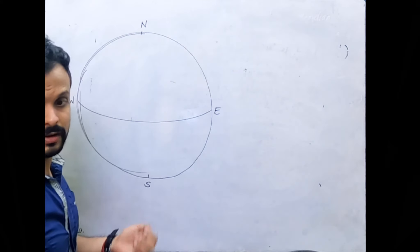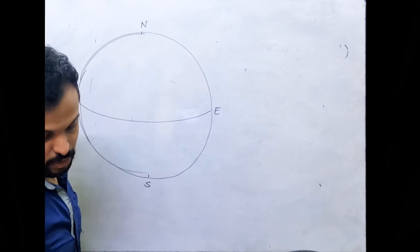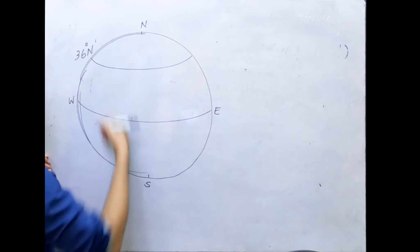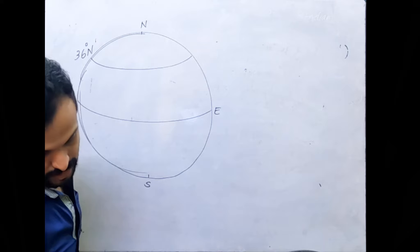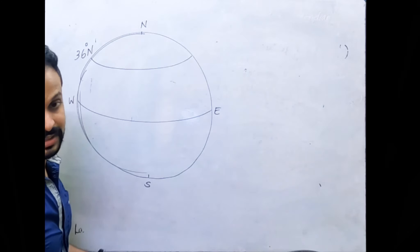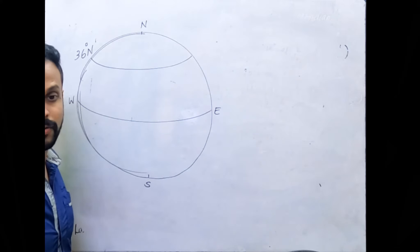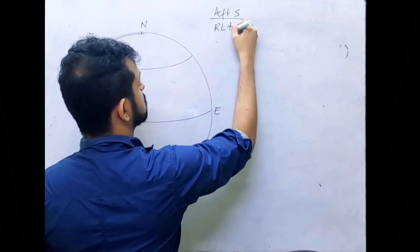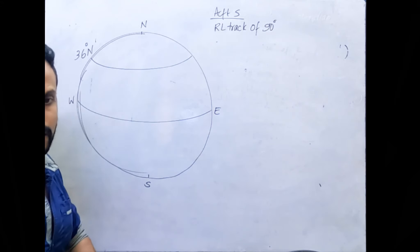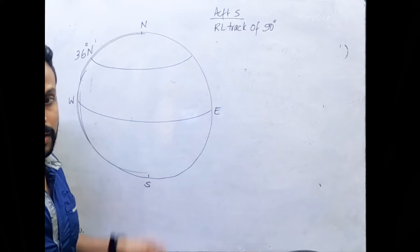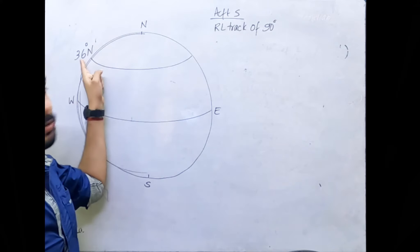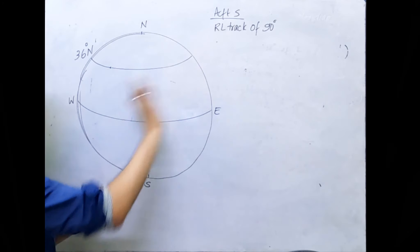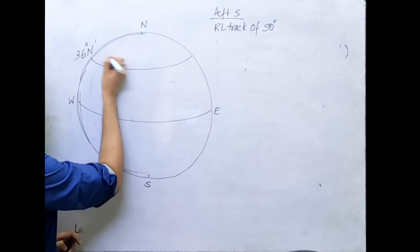Let's mark the departure location of Aircraft S: 36° North, 10° East. Drawing it a bit higher — 36° North, 10° East. Now what is the direction of travel of Aircraft S initially? It is traveling on a rhumb line track of 090°. What does that mean? It means traveling along a parallel of latitude — which parallel? 36° North. So from wherever it is, it is traveling east. I'll mark the starting position here since I'm moving in that direction. This is the starting position of Aircraft S — mark this point as A.